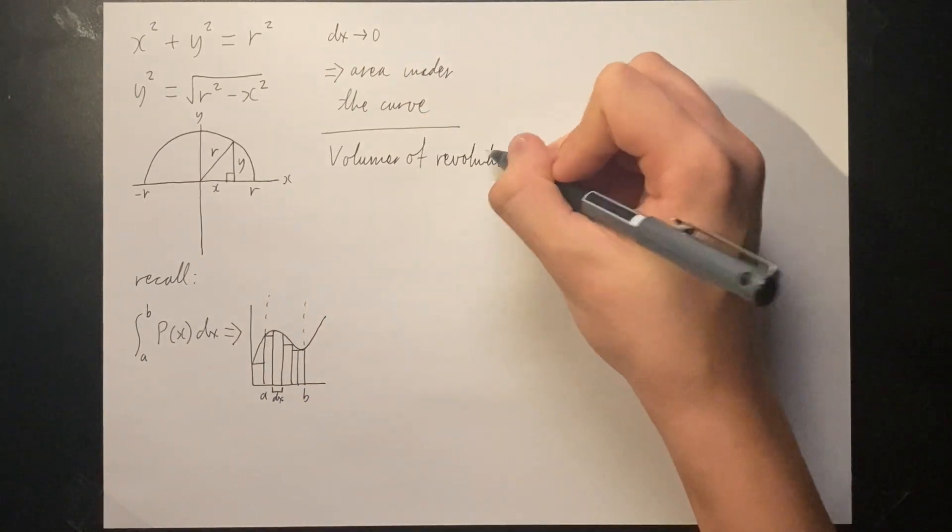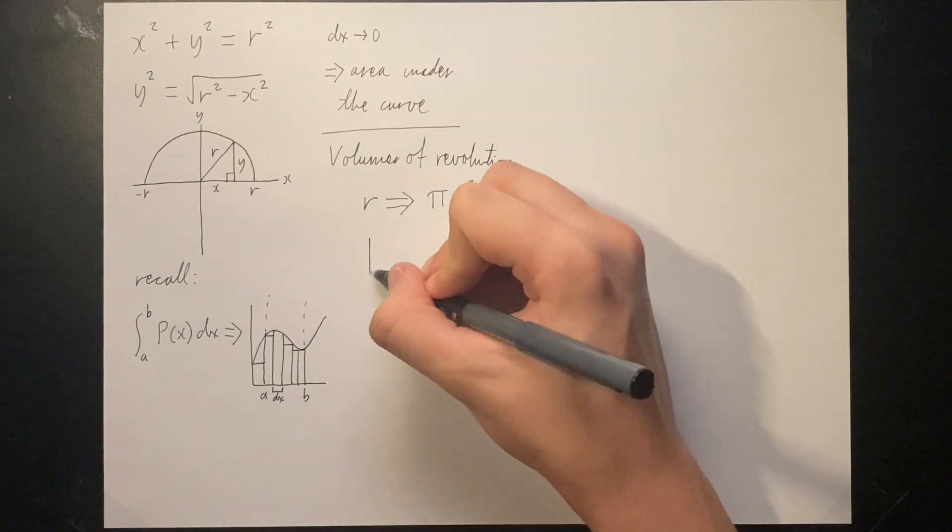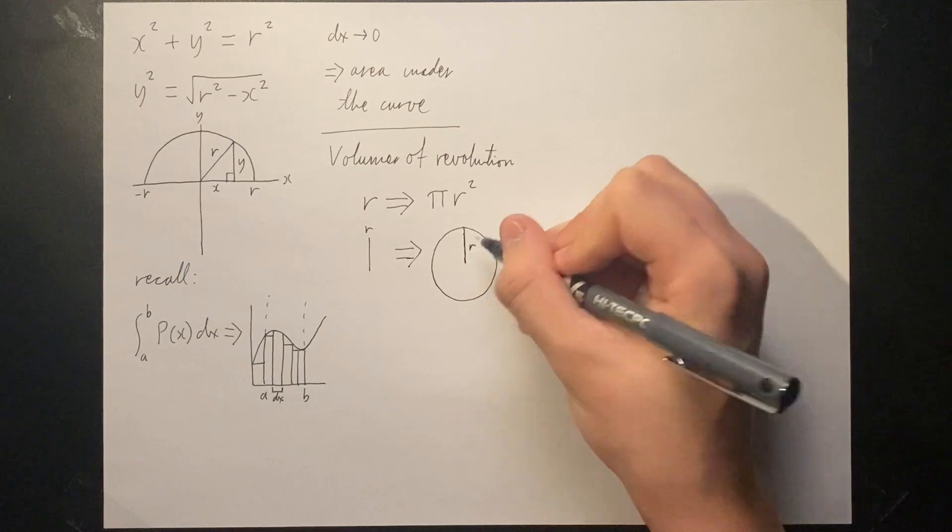For any length r, we can square it and multiply by pi to get the area of a circle with radius r. We can apply that same concept to a function.